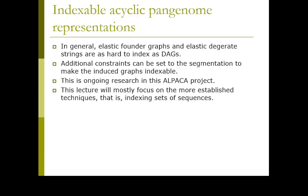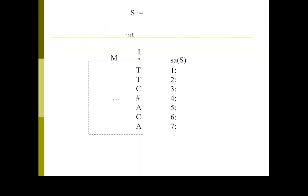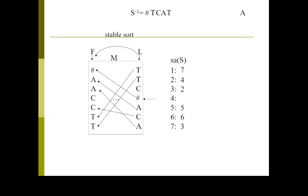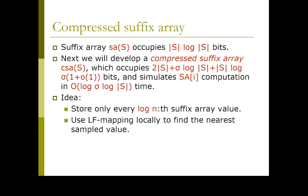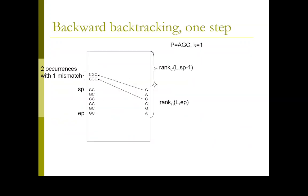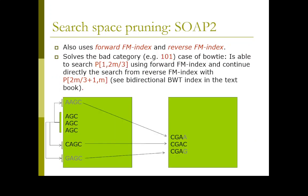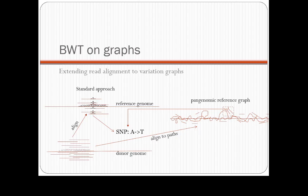So — suffix trees, suffix arrays, Burrows-Wheeler transform covered. Just a fast recap so you see these slides: backtracking, Burrows-Wheeler transform and pruning heuristics to speed up the search used by BWA and Bowtie, bidirectional search using SOAP used in SOAP2. And then this is where I stopped on Monday — a two-minute presentation of the one-and-a-half-hour presentation.